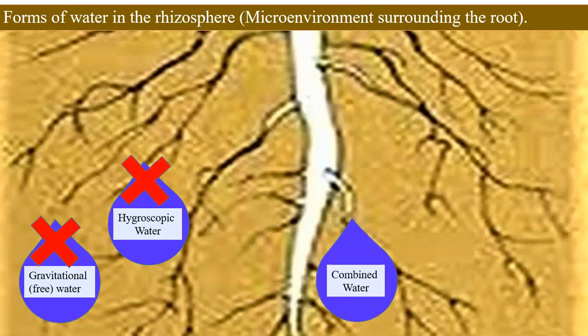The combined water is the water undergoing chemical reactions with the different elements present in the soil such as aluminum, silicon and such combined water is also not available for absorption.